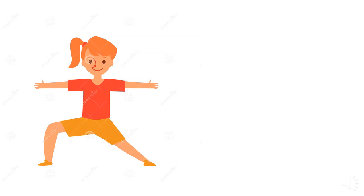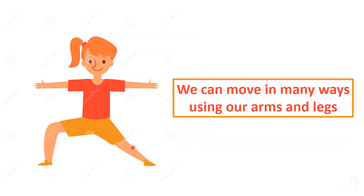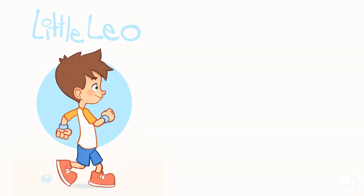Now, first of all, we learned last time that we have a head, right? We also have arms and legs — we call them limbs. We use our arms and legs to move. So we can move in many ways using our arms and legs. How can we move? Let's see together.